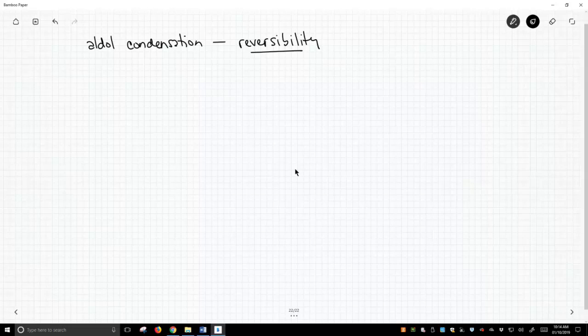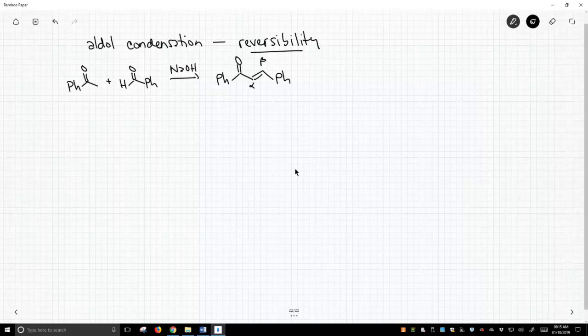So let's look at a classic aldol condensation. We might take a ketone and an aldehyde, and we treat these together with sodium hydroxide, and we will get an alpha-beta unsaturated ketone. This is a reaction that you should understand. You should be able to produce the mechanism for. There are other videos for this, but this should be a comfortable idea to us, how we make alpha-beta unsaturated ketones through an aldol condensation.